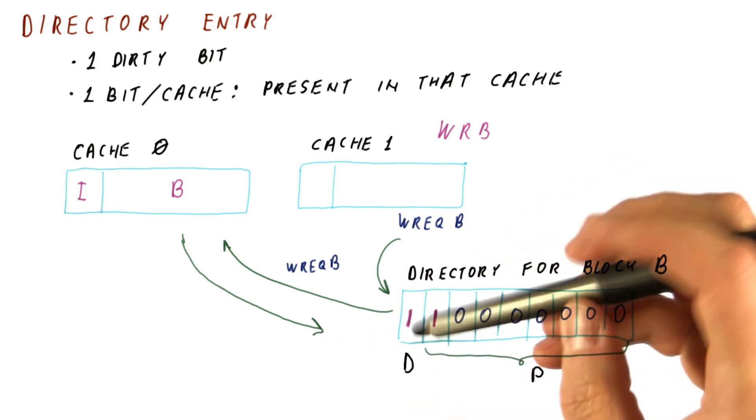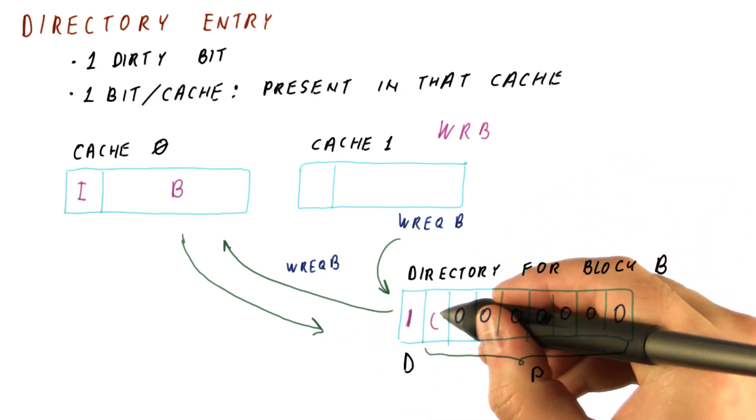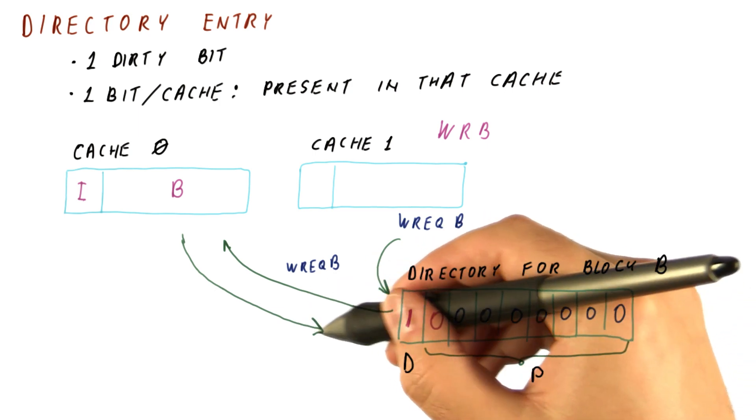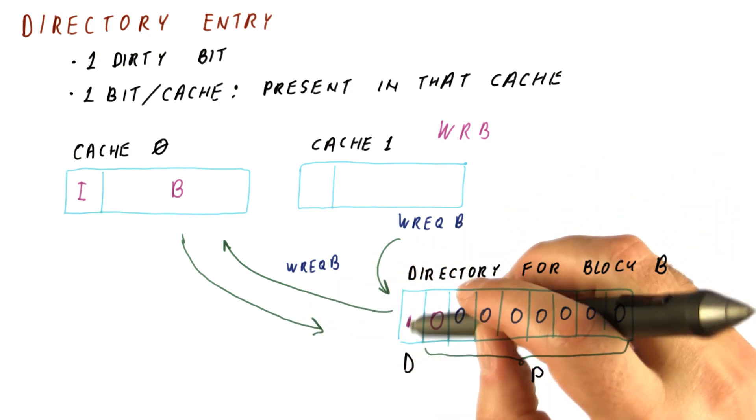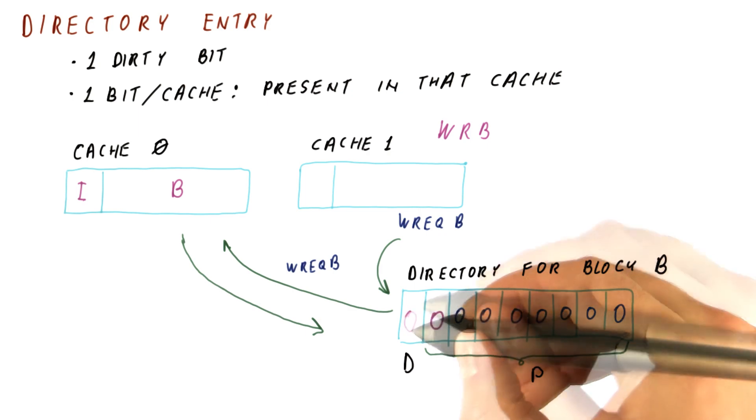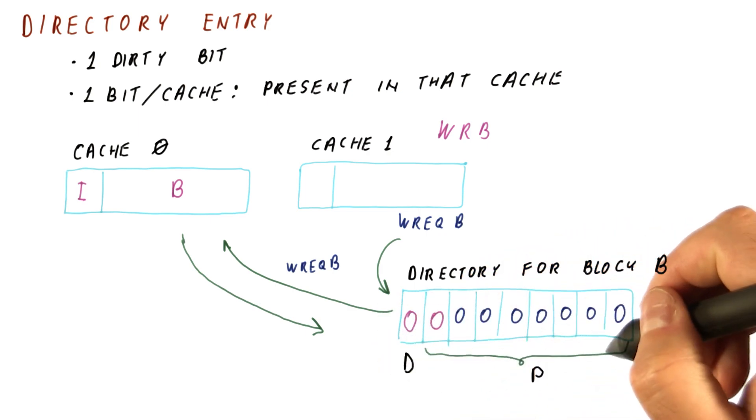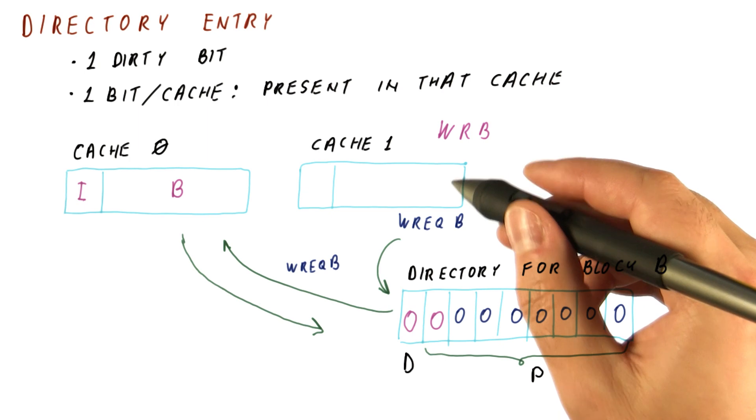When the acknowledgement arrives here, the directory controller can change this to zero. If the data didn't arrive, then we can erase the dirty bit. And now, because we don't have the data still, we will read the memory and send the data to cache one.